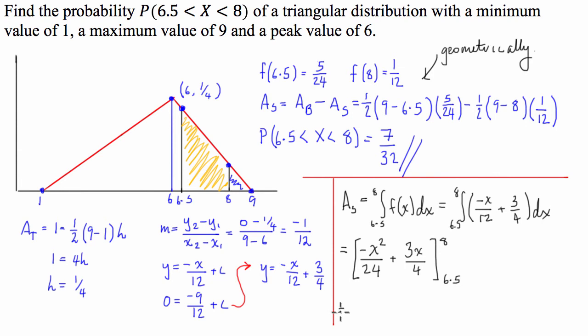So what finally this will come out to be is 8 squared, so it's going to be negative 64 divided by 24, plus 3 times 8, which is 24, over 4.